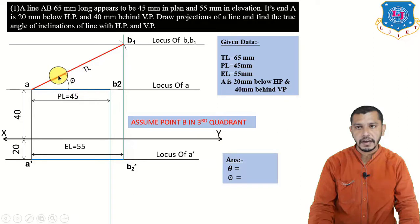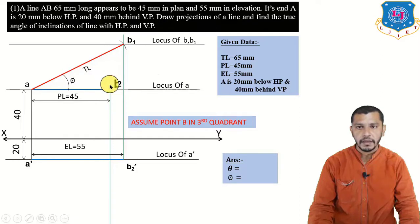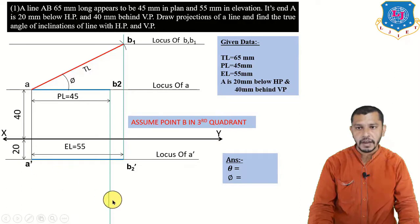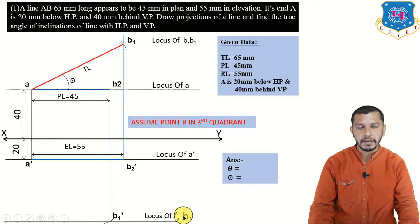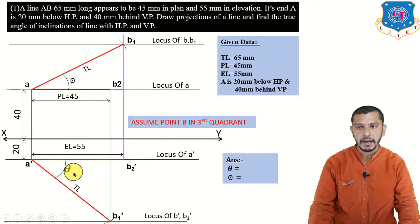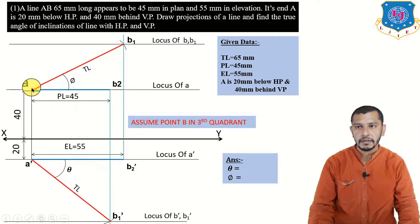Connect B1 to A to get the true length, which is inclined at angle phi — the angle of inclination of the line with the vertical plane. Again from A-dash, give an arc on the other projector to get B1-dash — this is the locus of B-dash and B1. Connect B1-dash to A-dash to get the true length inclined at angle theta.